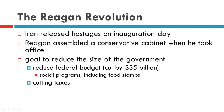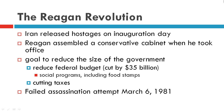A major goal of Reagan was to reduce the size of the government by shrinking the federal budget and cutting taxes. He proposed a new federal budget that called for cuts of $35 billion, mostly in social programs, including food stamps and federally funded job training centers.